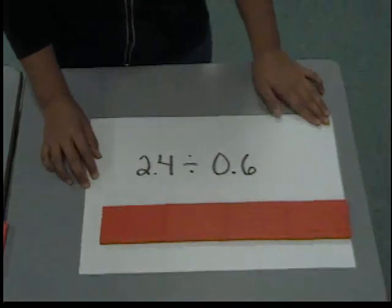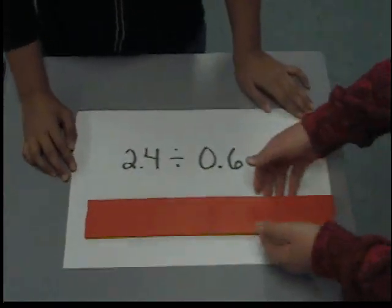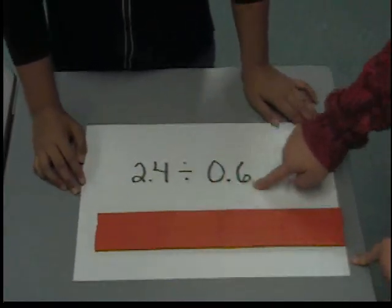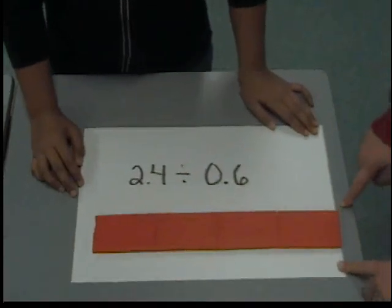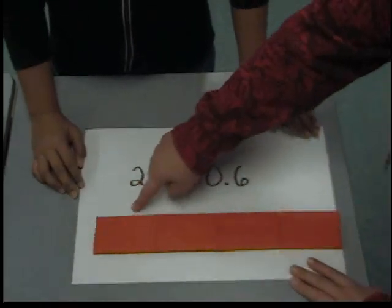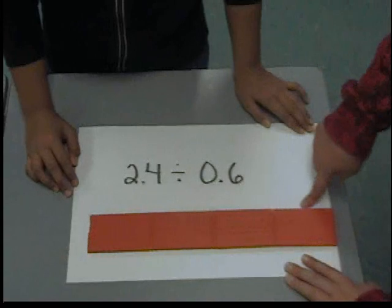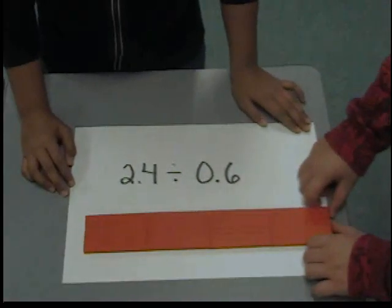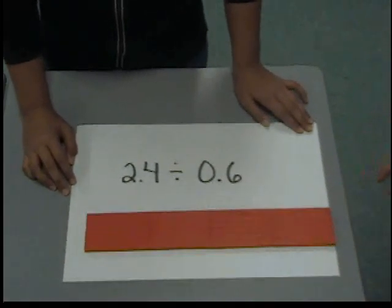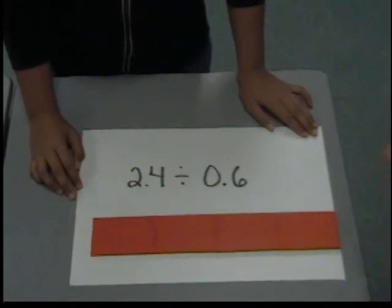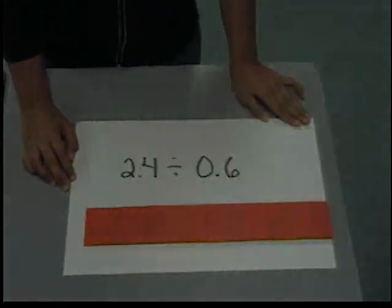Now we have our answer. While one of our side lengths is 0.6, right here, the other side length is 1, 2, 3, and 4. So our answer would be 2.4 divided by 0.6 equals 4.